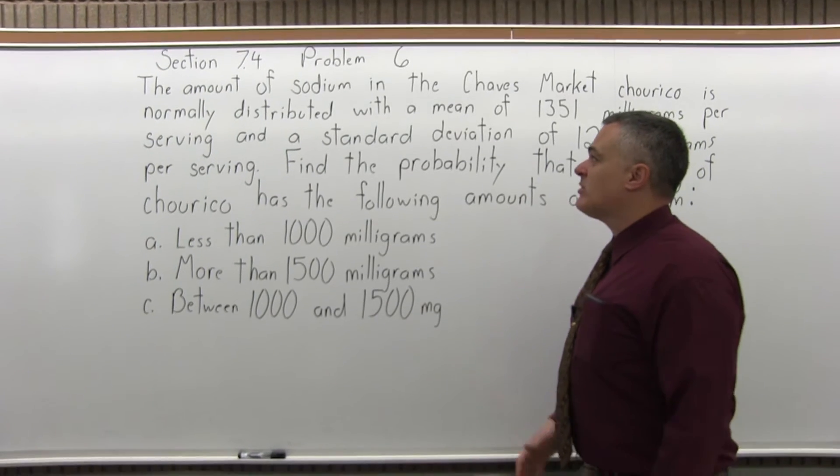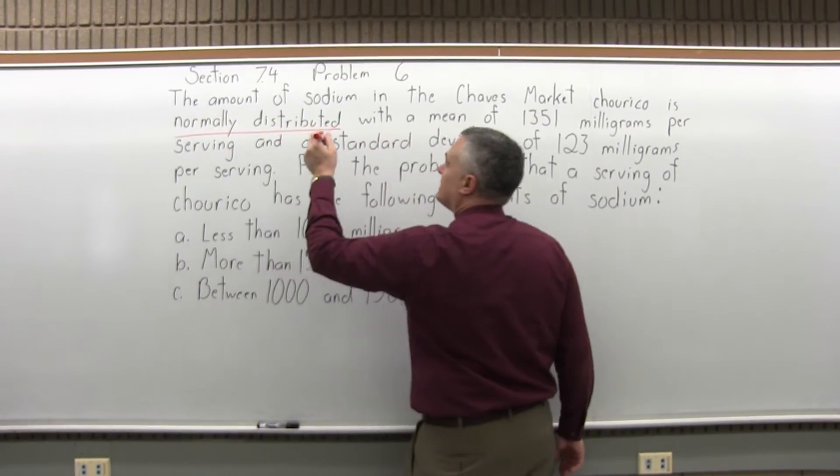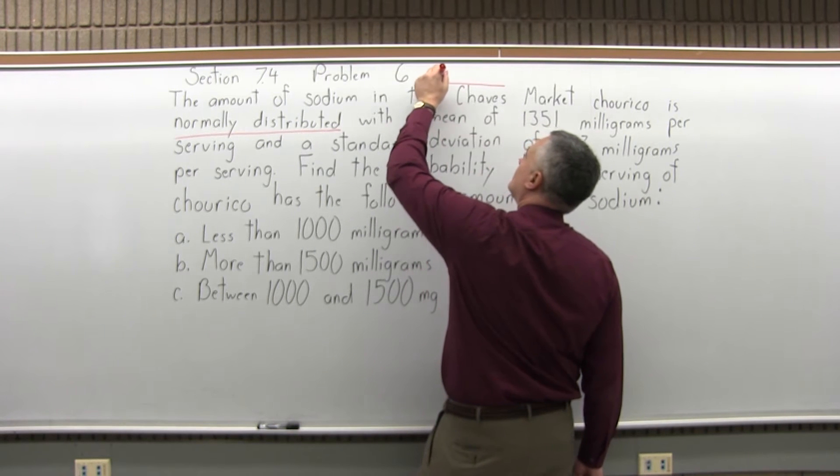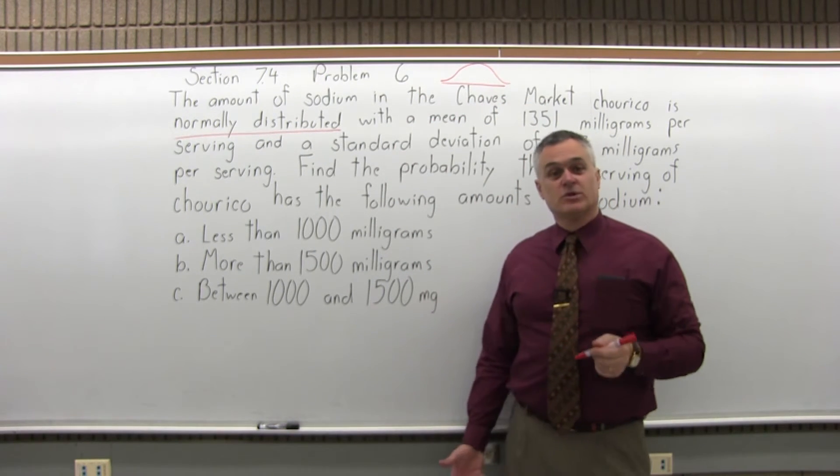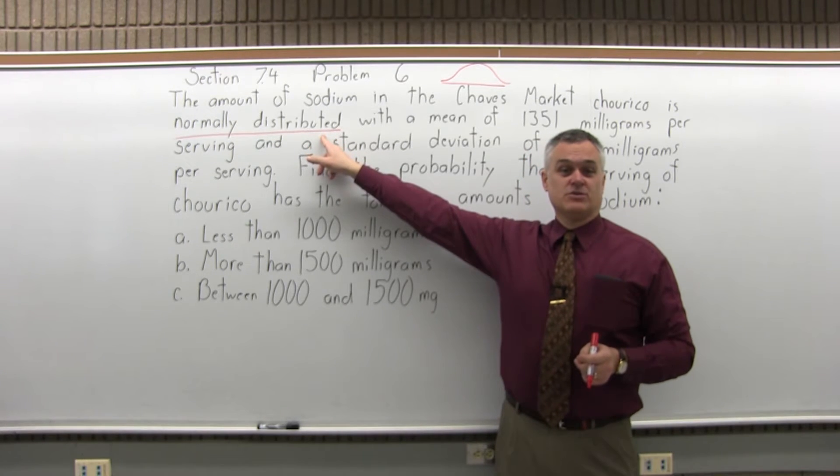To start the problem, because of the phrase 'normally distributed,' that means I get to use the bell curve and the standard normal chart that goes with it. That's the key, noticing that it says normally distributed.